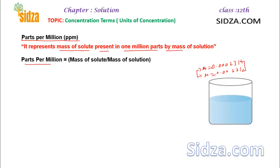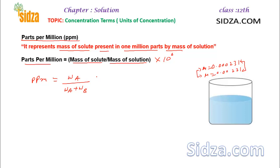PPM is calculated as the mass of solute divided by the mass of solution, multiplied by 10⁶. Just like a percentage concentration finds the mass of solute per 100 parts of solution (multiplying by 100), PPM expresses the concentration in one million parts by mass (multiplying by 10⁶). So PPM equals the weight of component A divided by the weight of component A plus weight of component B, times 10⁶.